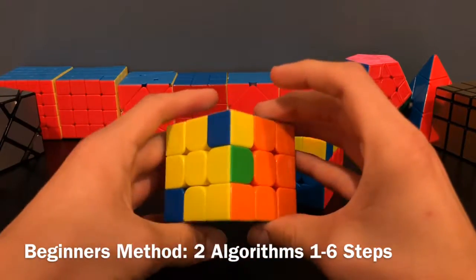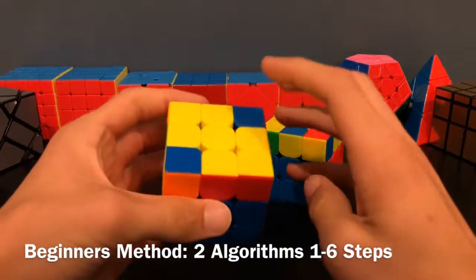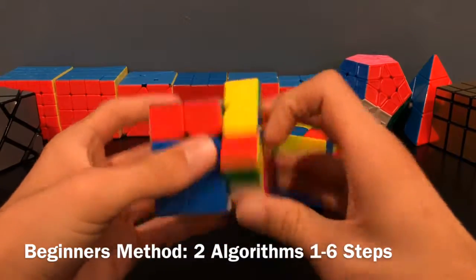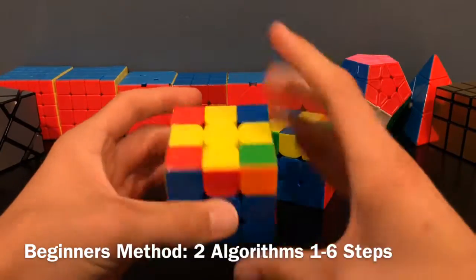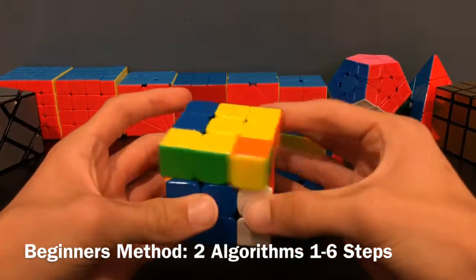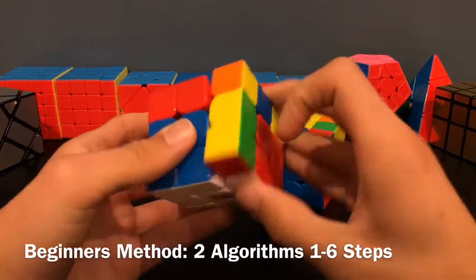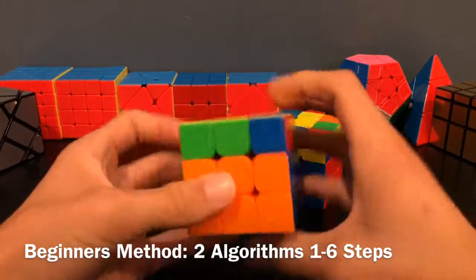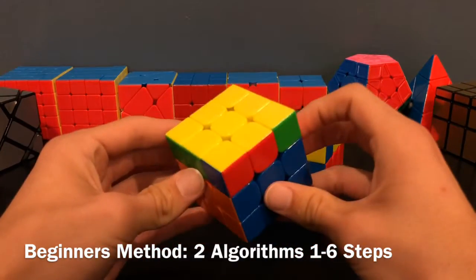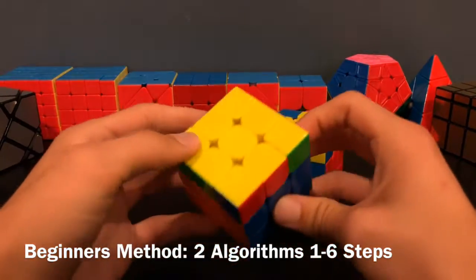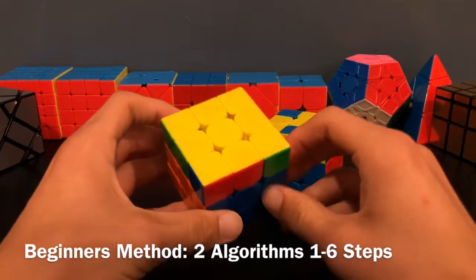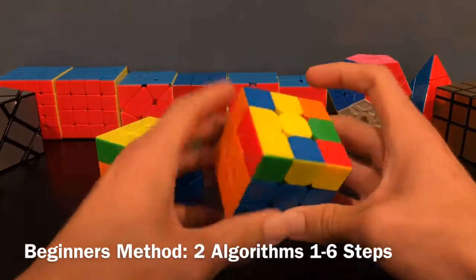You will first use a pretty simple algorithm to orient your edges and build your last layer cross. And then, using the SOON algorithm, you will then orient your corners. Now, it could take up to three times to do this. My video explains the most efficient way, so that you can always have it in under three tries.